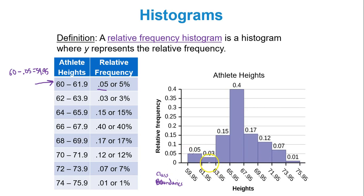For the second class, make sure you draw a rectangle going up to 0.03. Third class, 0.15. Fourth class, 0.4, and so forth. So the rectangles represent the relative frequencies in decimal form.